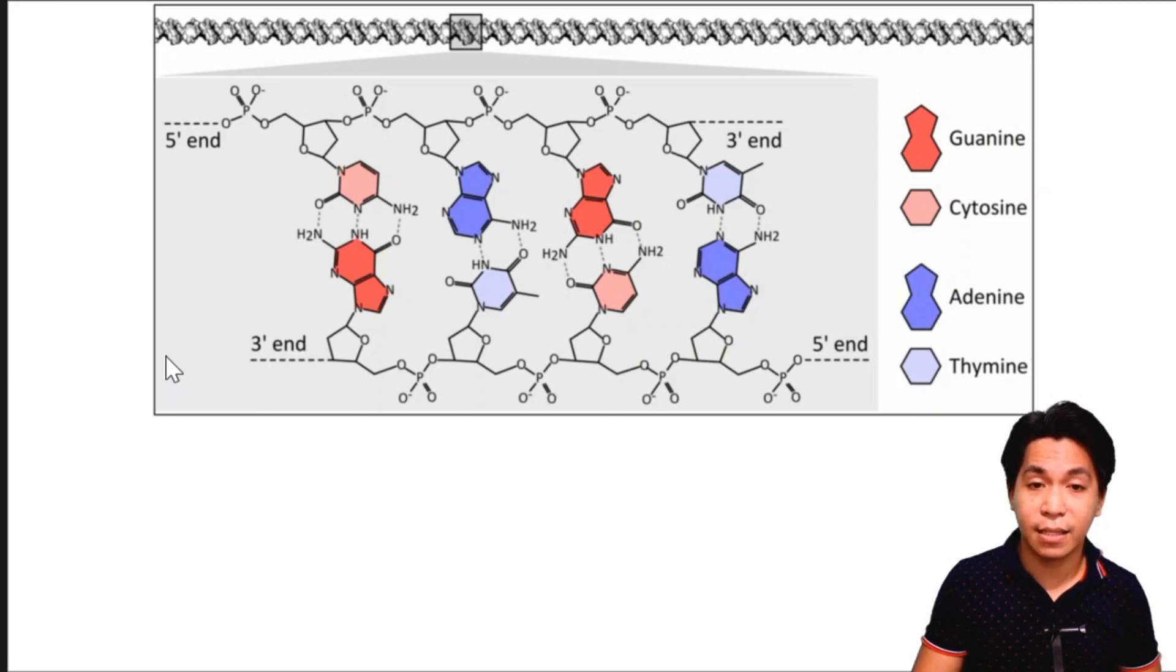The sequence is like this. If you have a pyrimidine, it is paired with a purine. Purine, pyrimidine. Purine, pyrimidine. Pyrimidine, purine. So the pairing is always a single ring to a double ring. Now the question is why do we have a pairing between a single and a double rings? The answer is to retain the geometry of a DNA in order for the sugar phosphate backbones to have an equal distance to one another.